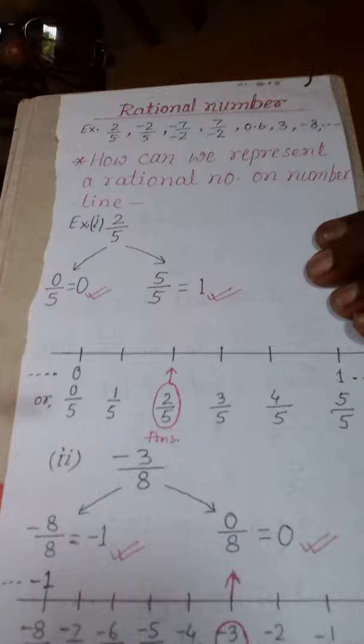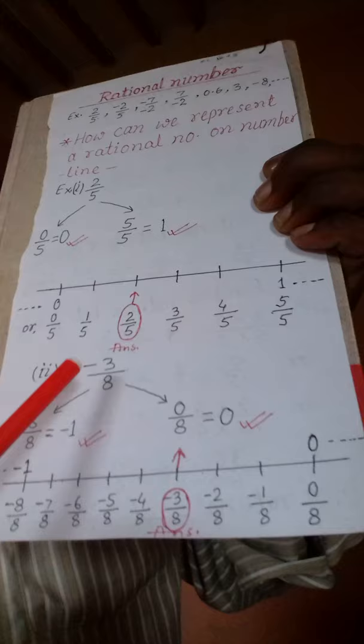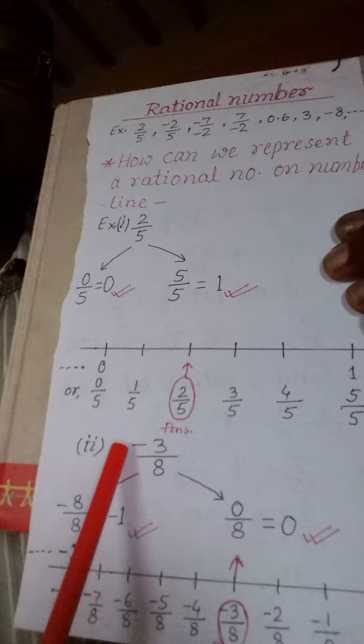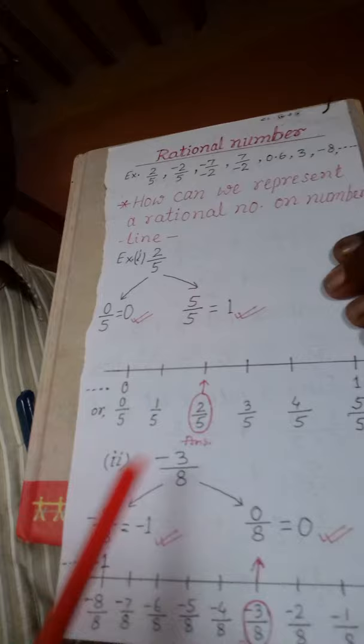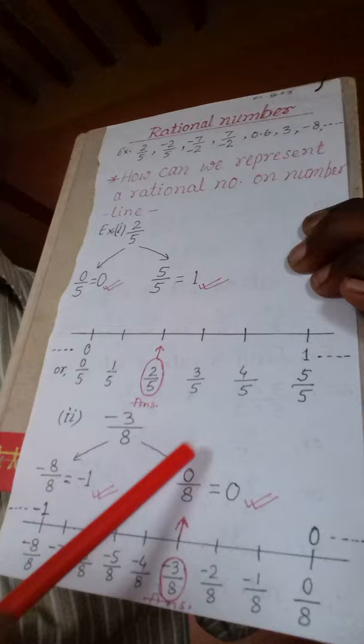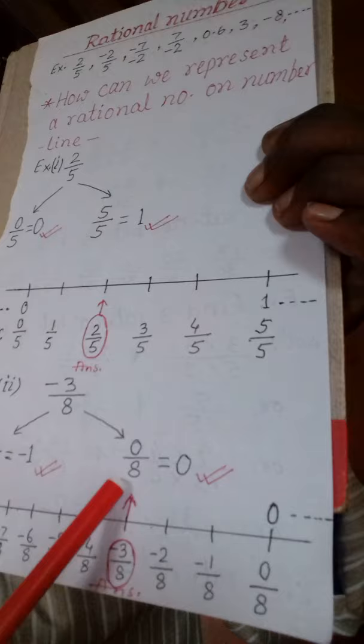नीचे एक और example के रूप में मैंने minus 3 by 8 का example लिया है। पहले के जैसा, इसको भी हम left side में कम करेंगे और देखेंगे कि 8 से कितना कम करने पर यह कट जा रहा है। तो minus 3 को कम करेंगे तो minus 4 होता है — आपको मालूम होना चाहिए। और right side में बढ़ाएंगे — minus 3 को आगे बढ़ाएंगे तो minus 2 by 8 होगा, minus 1 by 8 होगा, और जब 0 by 8 पर जाएगा तो यह पूरी तरह कट जाएगा और answer 0 आएगा। इस तरह left side का integer minus 1 मालूम हो गया।